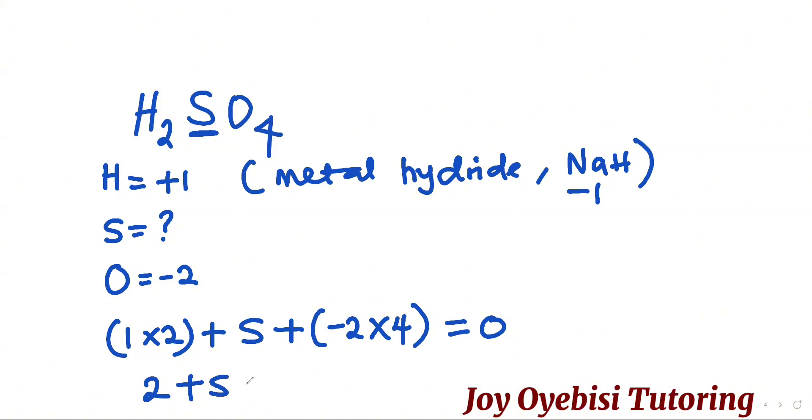So you have 2 plus X. Now negative 2 times 4 is negative 8, equals 0. 2 minus 8 is going to be negative 6. So X minus 6 equals 0. When the 6 crosses over, that becomes a positive 6. So you have X equals positive 6, and that is the oxidation number of sulfur.